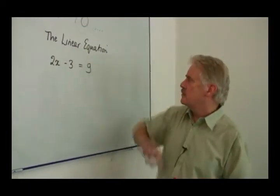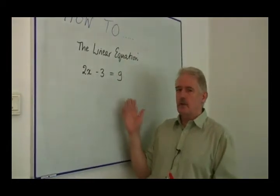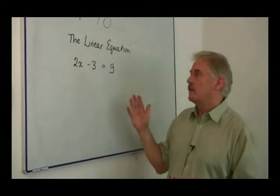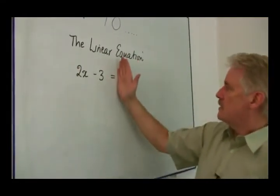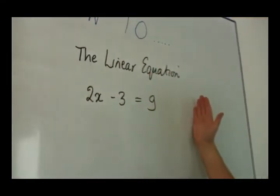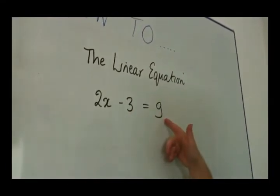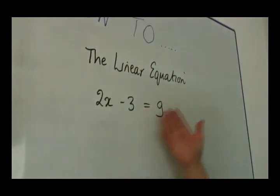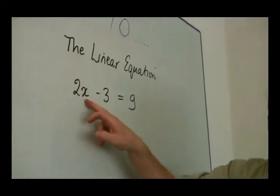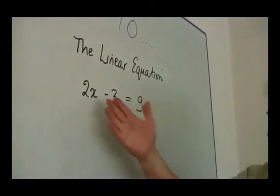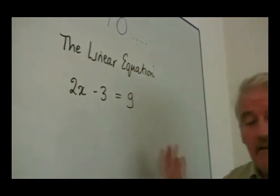I am Steve Jones and I am going to show you how to solve a linear equation. The first thing to understand about an equation is the word 'equal.' Whatever is on this side is equal to whatever is on that side. So, 2x minus 3 is equal to 9. It's not the same as 9, but it is equal to 9. You don't know what x is, but you know that 2x minus 3 and 9 are equal.